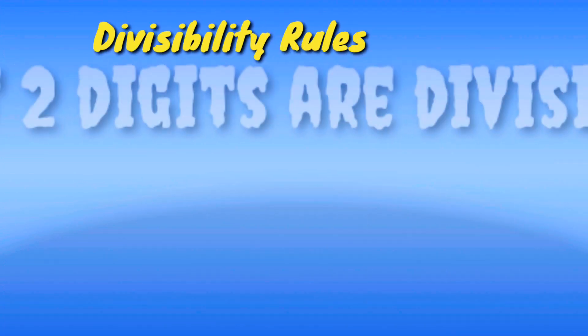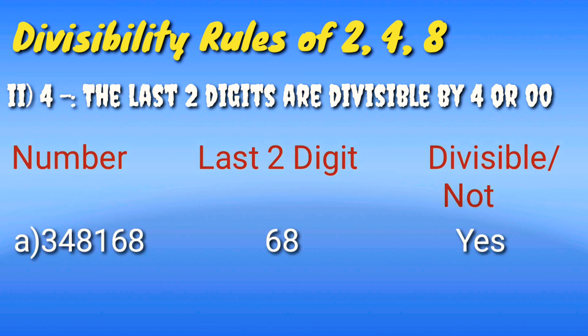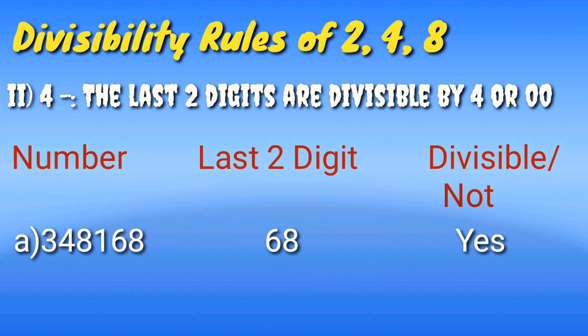Second, divisibility rule of 4. If the last two digits are divisible by 4 or are 00, the number is divisible by 4. For example, 3,48,168. The last two digits are 68. 68 is fully divisible by 4, so the whole number is divisible by 4.